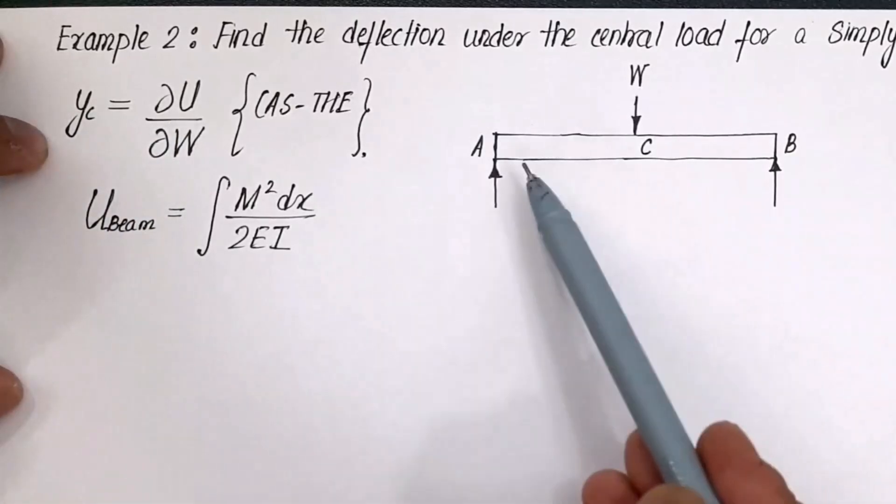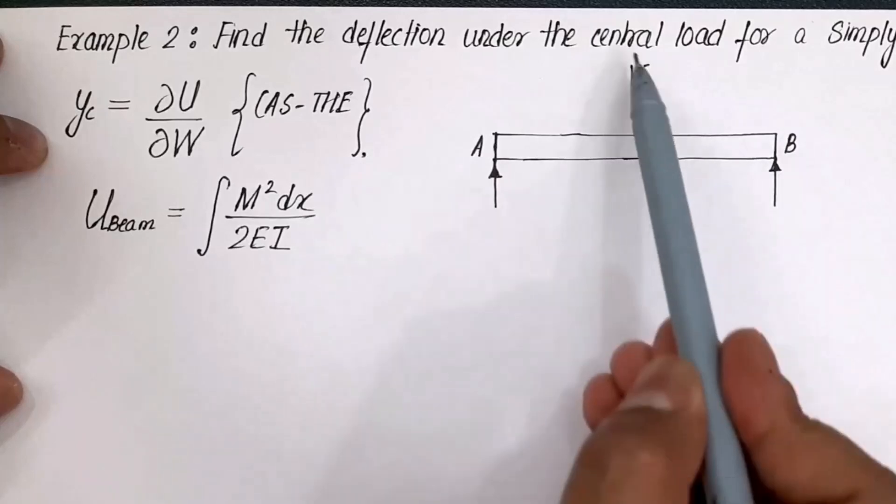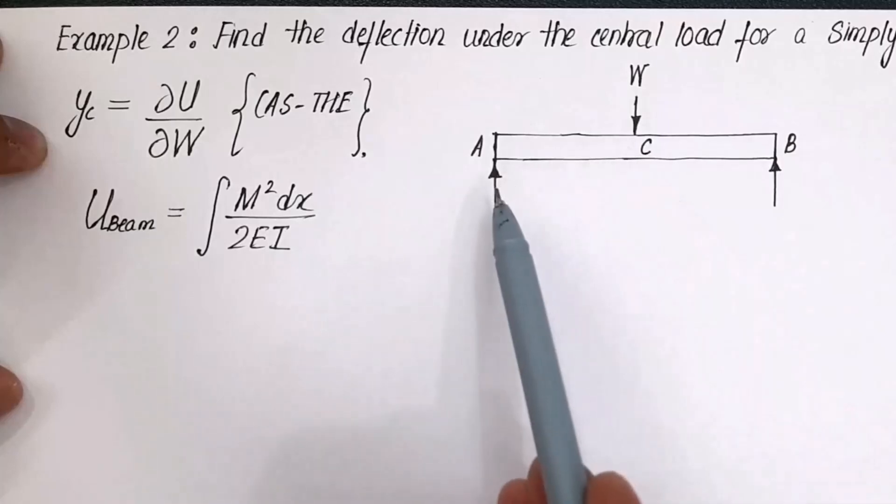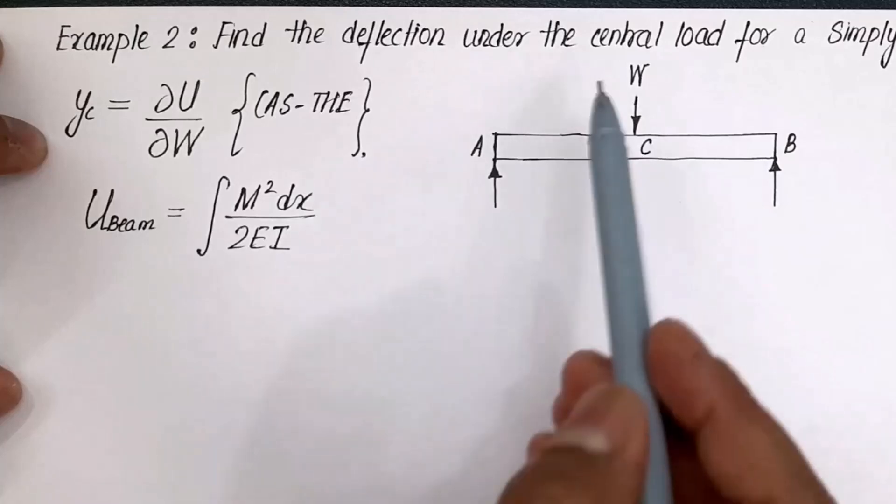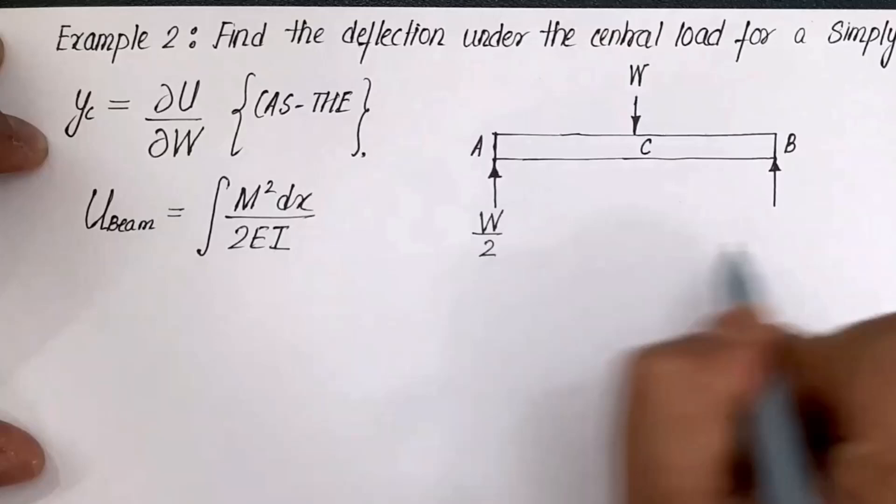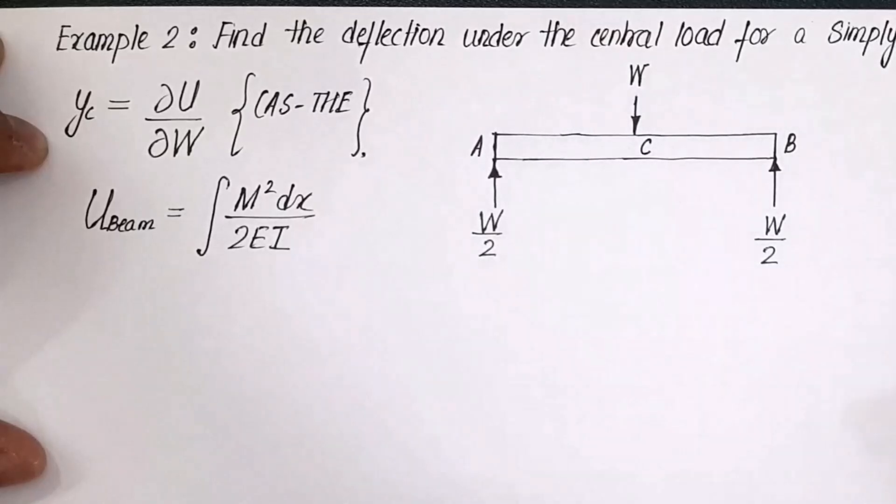As you can see, the beam has been divided into two portions, that is AC and CB. This load is acting centrally, so we can say that the support reactions will share it equally. That means this load W will be divided into W over 2 and W over 2. That is the first thing.